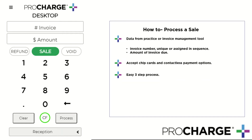In order to process a sale on the ProCharge desktop payment application, you will need two important pieces of information from your practice or invoice management software. First, you will need an invoice number. This can be a uniquely generated number or you can use a sequential number provided based on your ProCharge desktop settings.